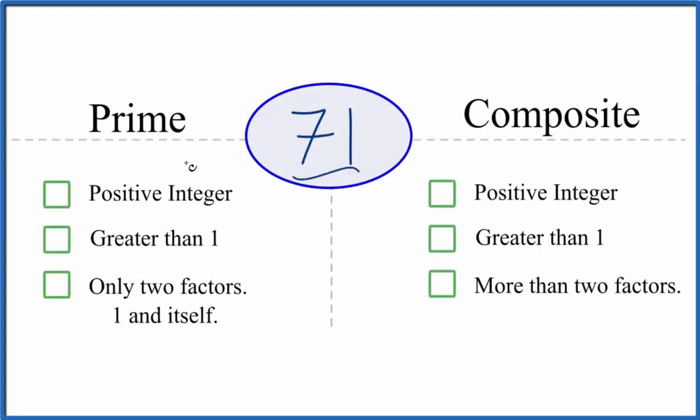Let's take a look and see if 71 is a prime number or a composite number. And here's how we'll do it.